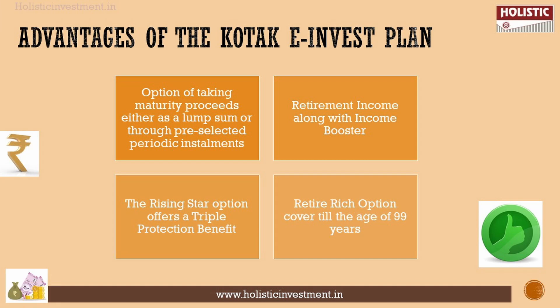Next, let's analyze the advantages and disadvantages of this policy. For the advantages, if you choose the Maximizer or Rising Star option, you have a settlement option — the policyholder can receive maturity proceeds as a lump sum or periodic installment as retirement income. The Rising Star option offers a triple protection benefit.